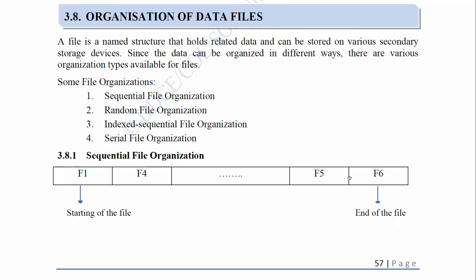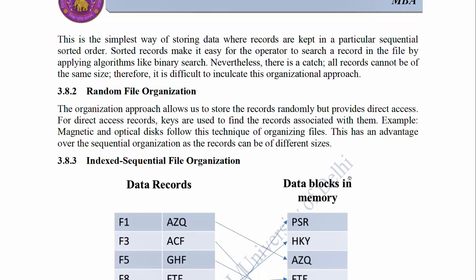3.8.1 Sequential File Organization: This is the simplest way of storing data where records are kept in a particular sequential sorted order. Sorted records make it easy for the operator to search a record in the file by applying algorithms like binary search. Nevertheless, there is a catch — all records cannot be of the same size. Therefore, it is difficult to implement this organizational approach.